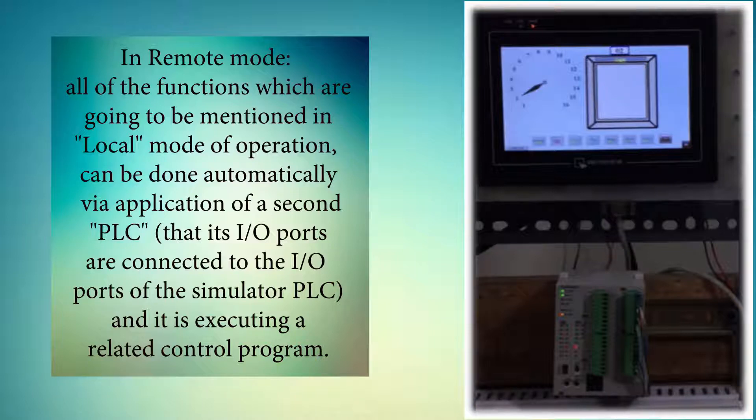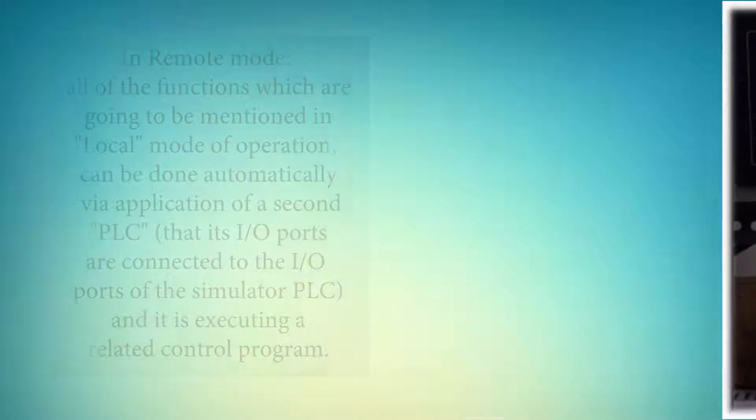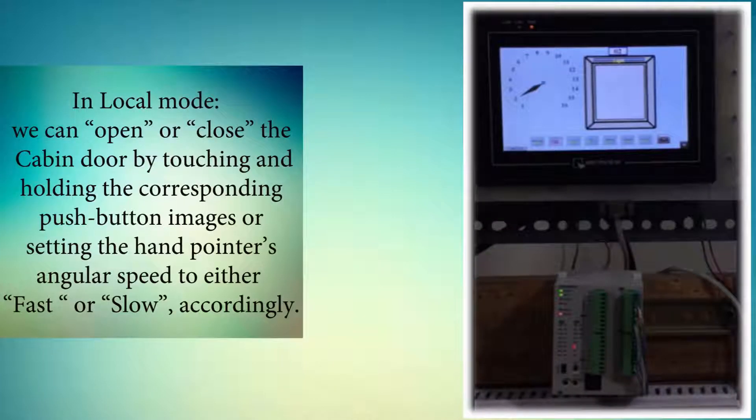In local mode, we can open or close the cabin door by touching and holding the corresponding push-button images, or set the hand pointer's angular speed to either fast or slow accordingly.